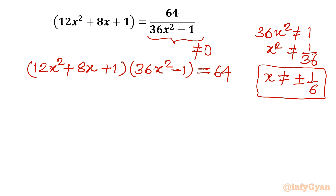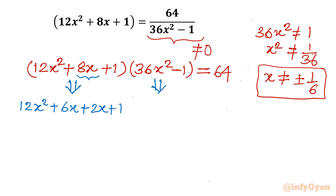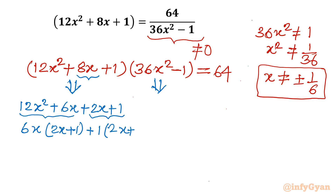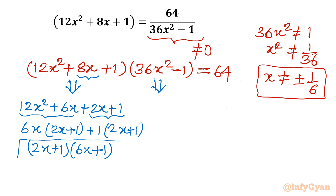I will deal with both brackets separately — this bracket using factorization and the other using an algebraic identity. For the first bracket, I consider 8x as 6x + 2x. So: 12x² + 6x + 2x + 1. From the first two terms, 6x is common, leaving (2x + 1). From the last two terms, 1 is common, also giving (2x + 1). So the factorization is (2x + 1)(6x + 1).